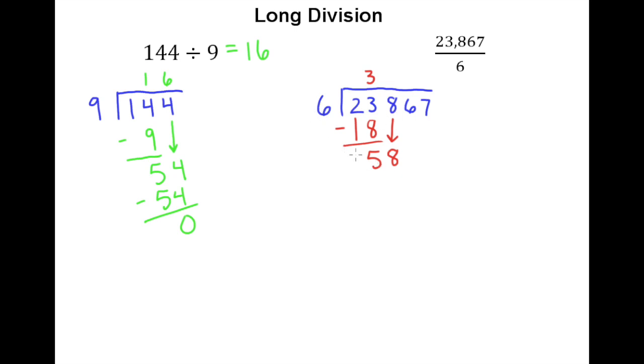Now 6 goes into 58. You should be thinking about your multiplication facts. 6 times 8 is 48. 6 times 9 is 54. Any bigger than that, 6 times 10 would be 60. That's way too big. So definitely got to be a 9 here.